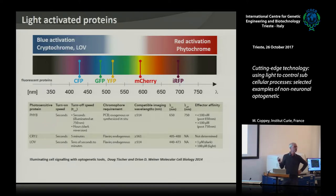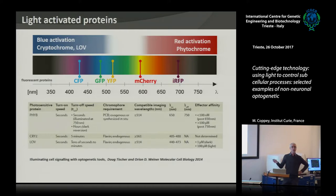One thing I want to mention is that the power of light you need to use is very dim. If you can image GFP, you are above the threshold needed for activating these proteins — very little light is sufficient. These systems have been evolved by natural evolution to be very sensitive to light, so you don't need to shine a lot.